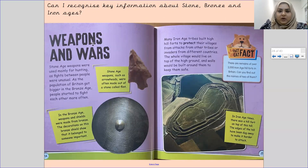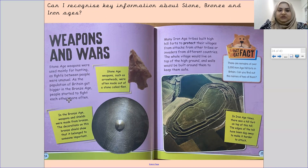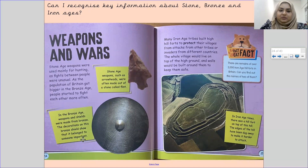Stone Age weapons were used mainly for hunting as fights between people were unusual. As the population of Britain got bigger in the Bronze Age, people started to fight each other more often. Stone Age weapons such as arrowheads were often made from a stone called flint. In the Bronze Age, weapons and shields were made from bronze — some decorations on a bronze shield showed that it belonged to someone important.